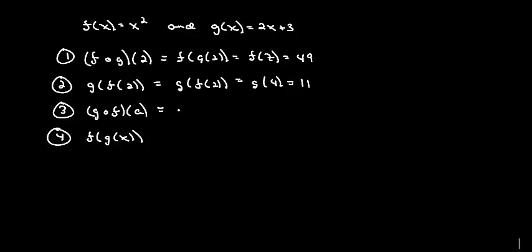Okay, g of f of a. That is g of f of a, so we take a, plug it into f first, which gives us a squared, and so we need g of a squared, which is 2a squared plus 3.